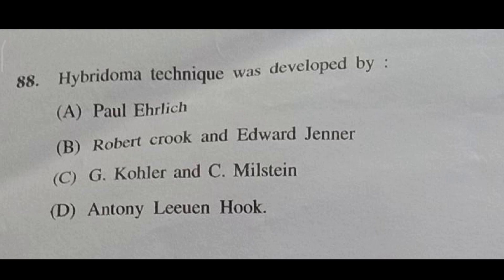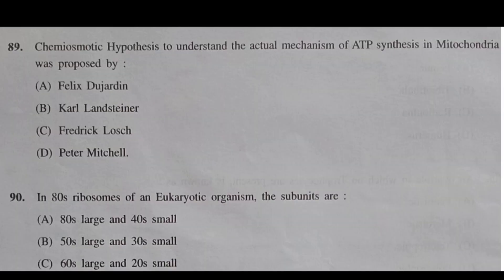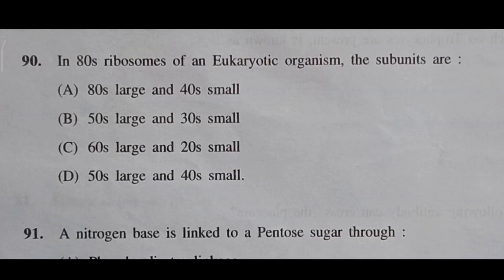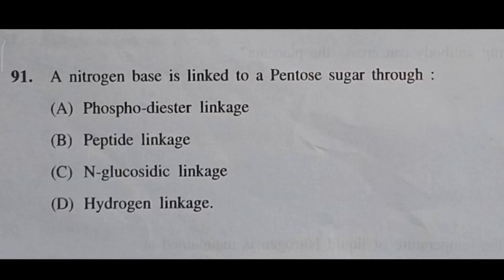Question 88: Hybridoma technique was developed by — answer will be C, G. Kohler and C. Milstein. Question 89: Chemiosmotic hypothesis to understand the actual mechanism of ATP synthesis in mitochondria was proposed by — answer will be D, Peter Mitchell. Question 90: In 80S ribosomes of a eukaryotic organism, the subunits are 60S and 40S.